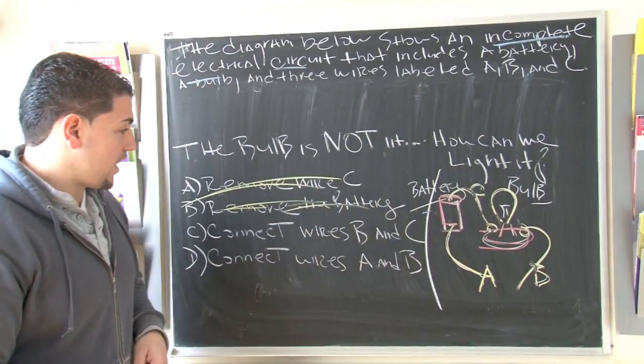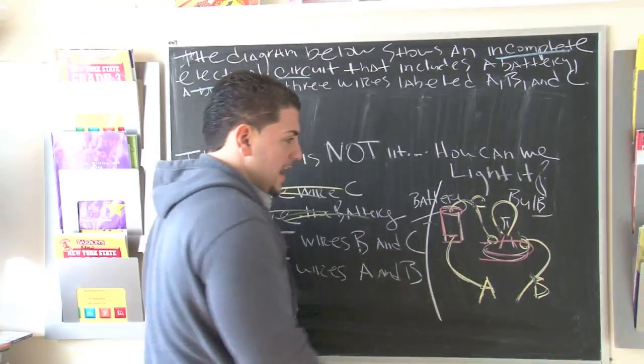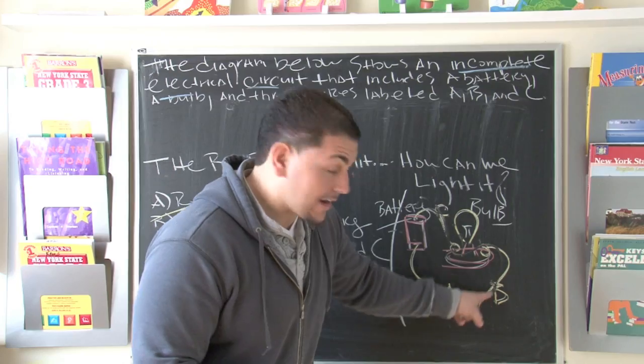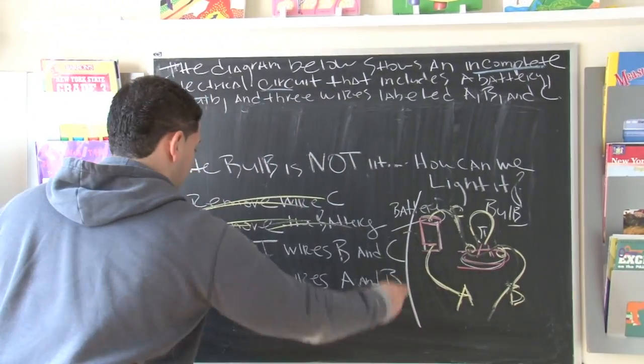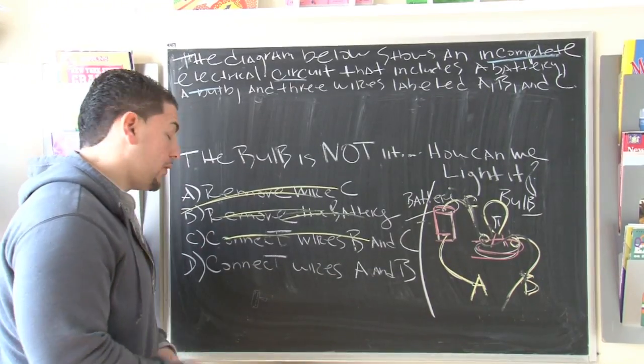So watch. C and D, 50-50 shot right now. Connect wires B and C. Well, connect wires B and C, if you're really smart, you'll see that they're already connected. So that's out. So the last and final choice has got to be D, but let's just read it to make sure we know what we're talking about.